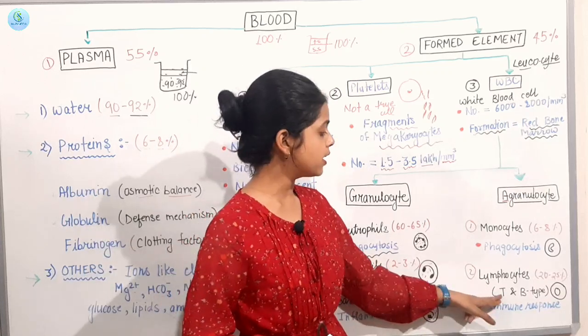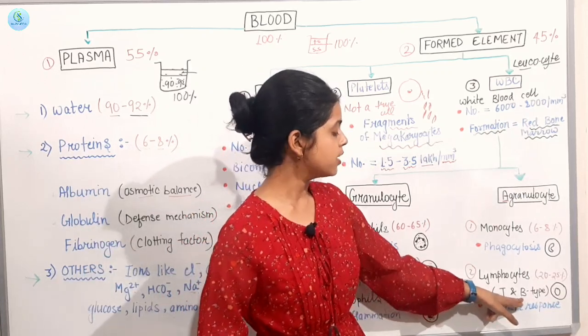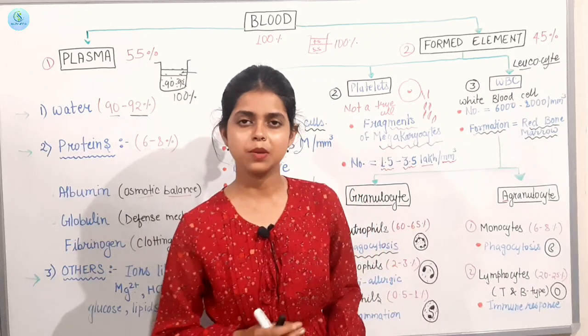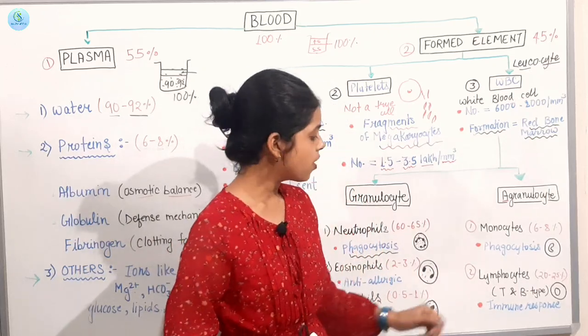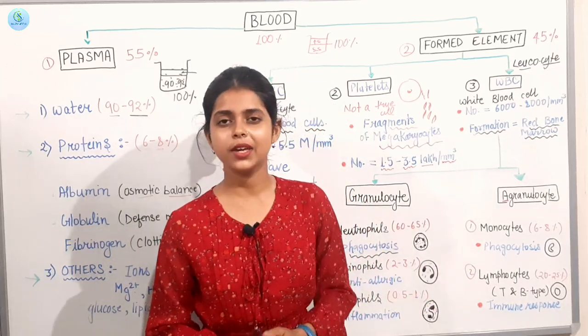And there are two types of things, which are lymphocyte, which are two parts: one is T lymphocyte and the other is B lymphocyte. This structure, the nucleus is simple, it will be circular. And it helps your immune response.